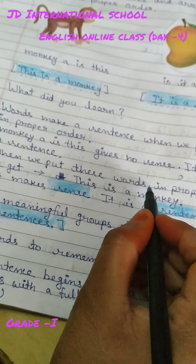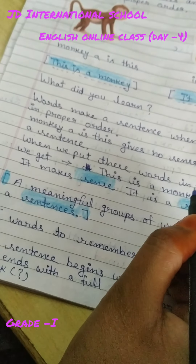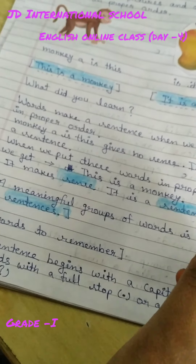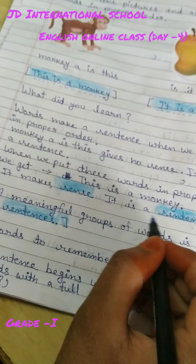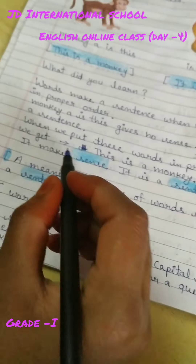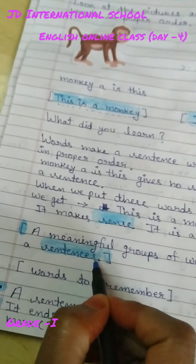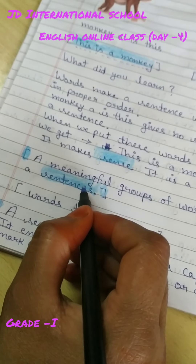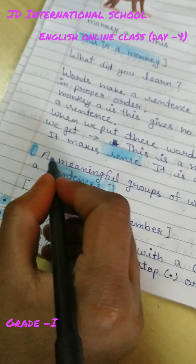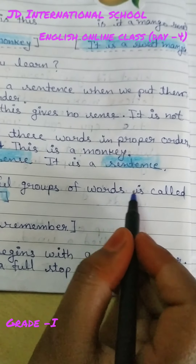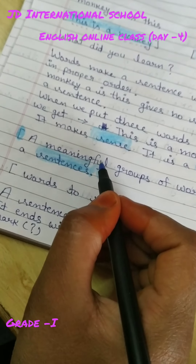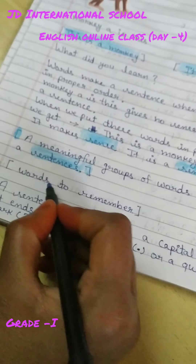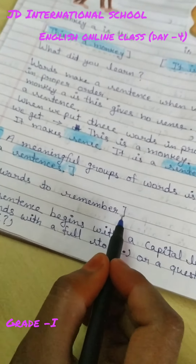This is a sentence. When we put these words in proper order, we get 'This is a monkey.' जब हमने उनको proper order में arrange किया तो हमको मिला 'this is a monkey' — इसका मतलब समझ में आया, it makes sense, it is a sentence. The definition of sentence: a meaningful group of words is called a sentence.